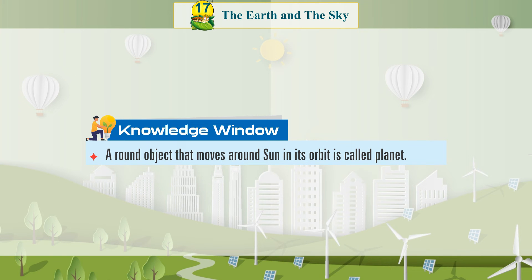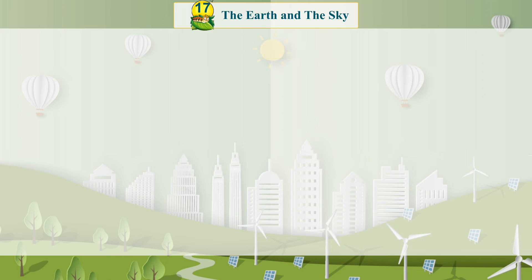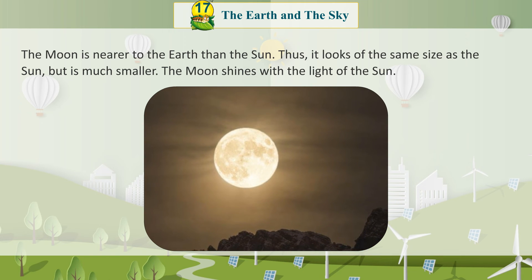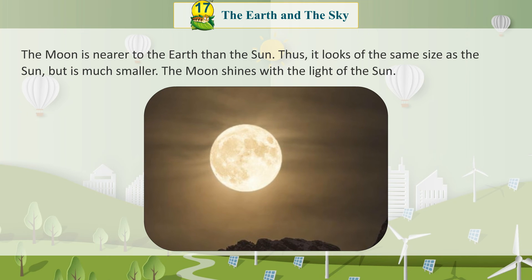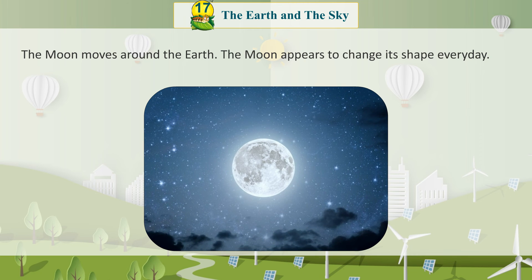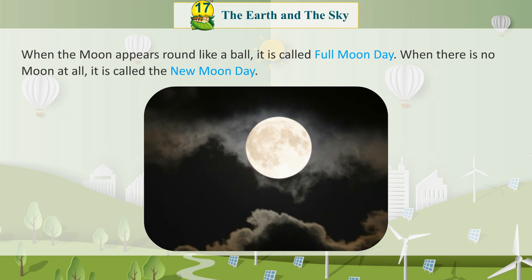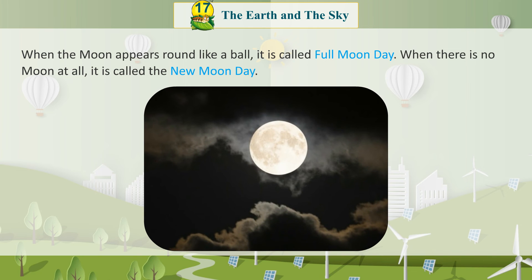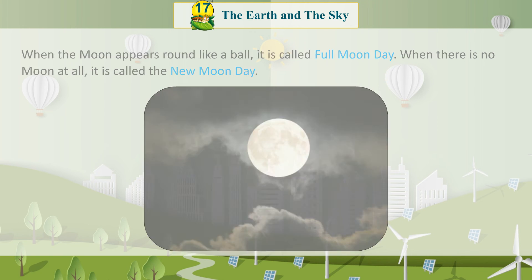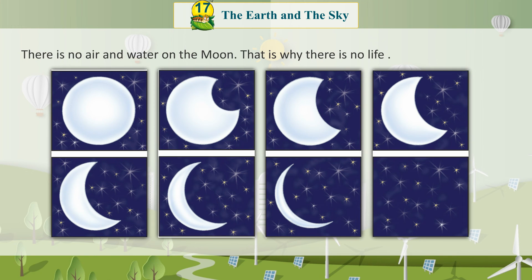Knowledge Window: A round object that moves around the sun in its orbit is called a planet. The Moon: The moon is nearer to the earth than the sun. Thus, it looks of the same size as the sun, but is much smaller. The moon shines with the light of the sun. The moon moves around the earth. The moon appears to change its shape every day. When the moon appears round like a ball, it is called full moon day. When there is no moon at all, it is called the new moon day. There is no air and water on the moon. That is why there is no life.